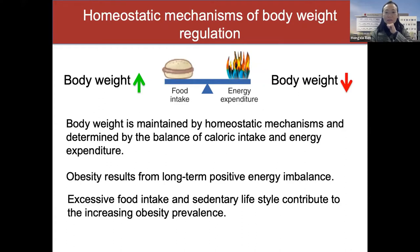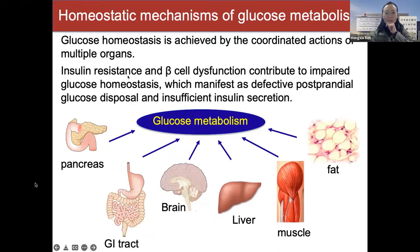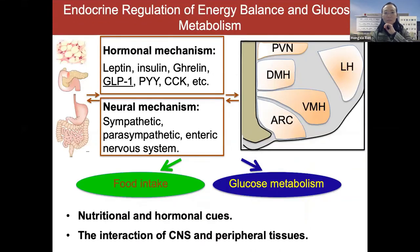In modern societies, excessive food intake and a sedentary lifestyle have contributed to increasing obesity prevalence. We're also interested in glucose homeostasis, which is achieved by coordinated actions of multiple organs: pancreas, gut, intestine, brain, liver, muscle, and fat. Hyperglycemia or hypoglycemia can both be detrimental to human health. In a diabetes setting, insulin resistance and beta cell dysfunction contribute to impaired glucose homeostasis, manifesting as defective postprandial glucose disposal and insufficient insulin secretion.